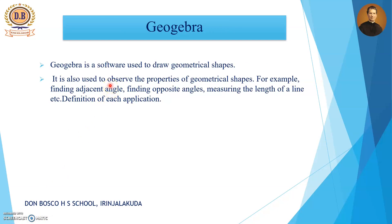The next software is GeoGebra. GeoGebra is a mathematical software. What is its use? It is a software used to draw geometrical shapes like rectangles, squares, polygons, triangles, etc. It is also used to observe the properties of geometrical shapes. Don't memorize — just understand and study. The properties of geometrical shapes include, for example, finding adjacent angles, finding opposite angles, and measuring the length of a line.